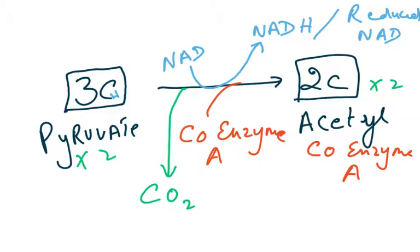This whole process takes place twice because we had two pyruvates, so we have two acetyl-CoA. To summarize the link reaction: the three-carbon pyruvate is converted to two-carbon acetyl-CoA.